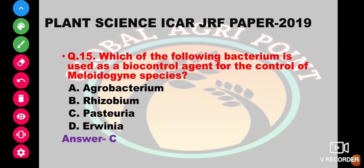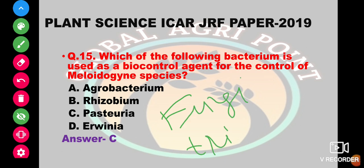Which bacterium is used as a biocontrol agent for the control of Meloidogyne species? The options are Agrobacterium, Rhizobium, Pasteuria, and Raduania. The answer is Pasteuria. Additionally, the fungus Trichoderma is also used as a biocontrol agent against Meloidogyne species.